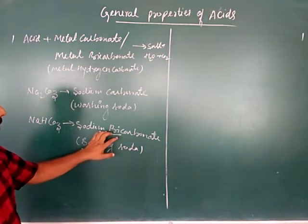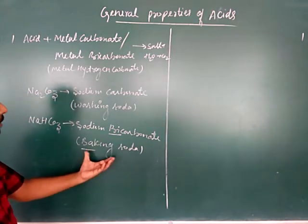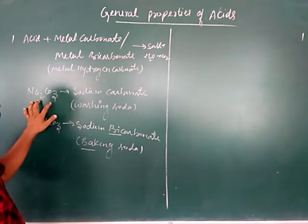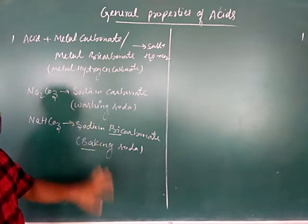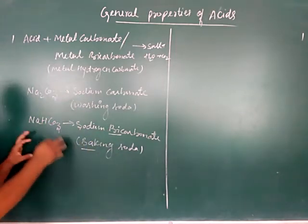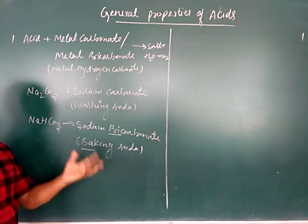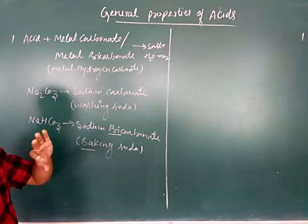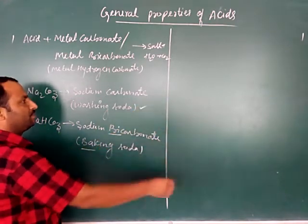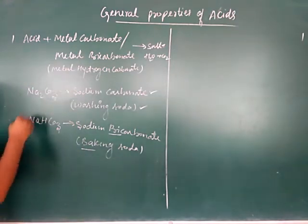NaHCO₃ chemical name is sodium bicarbonate, commonly baking soda. Sodium carbonate Na₂CO₃ is commonly washing soda. This is basic knowledge you must know — what the formula is, what the chemical name is, and what it is commonly called. Just like your school name and home name are different, similarly these chemicals have a common name and a chemical name.